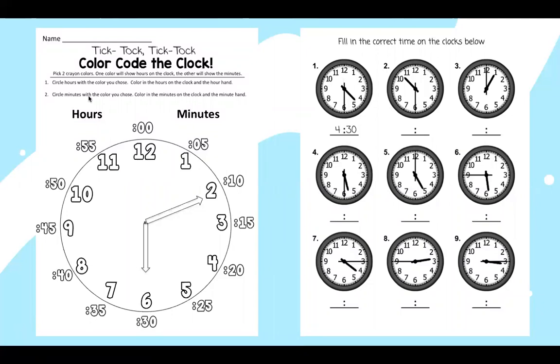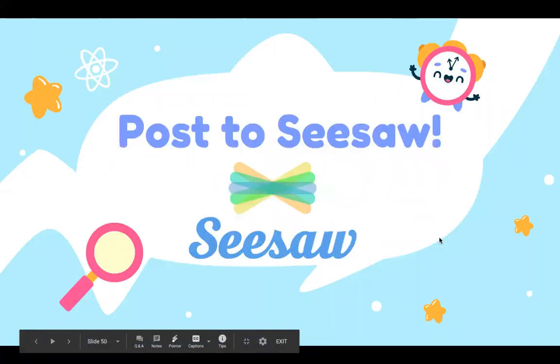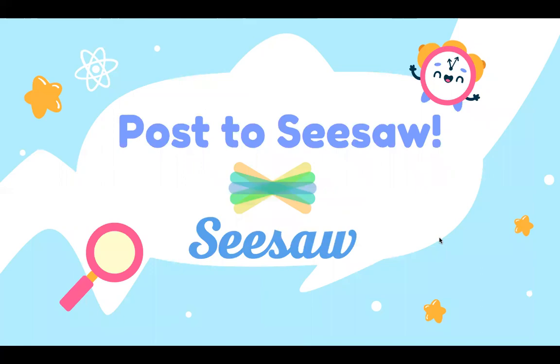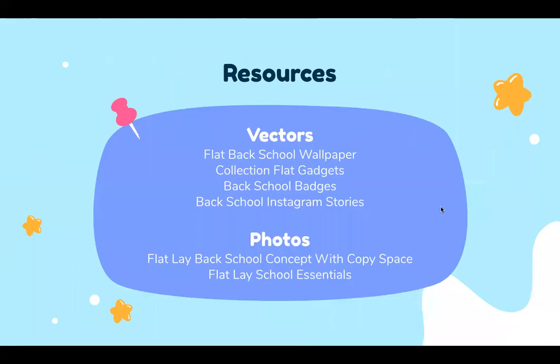Then circle minutes with the color you choose and color the minutes on the clock and the minute hand. So I'm going to circle minutes blue. And our long hand is the minute hand. I'm going to color that blue. And then I'll color our outside numbers blue for the minutes. Then if you have time on the back, I want you to look at the clock and write in those times. Remember to post to Seesaw when you're done. And if you forgot how, these are the steps. I can't wait to see your hard work.